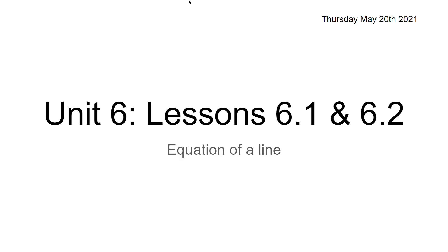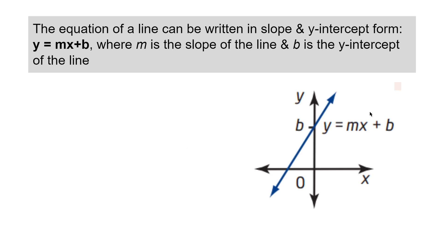Hello. For unit 6, we will be discussing the equation of a line more broadly. The equation of a line can be written in slope and y-intercept form, where the slope is m and b is the y-intercept, giving us an equation of y equals mx plus b. We've seen this before, but we're just going to review this again.